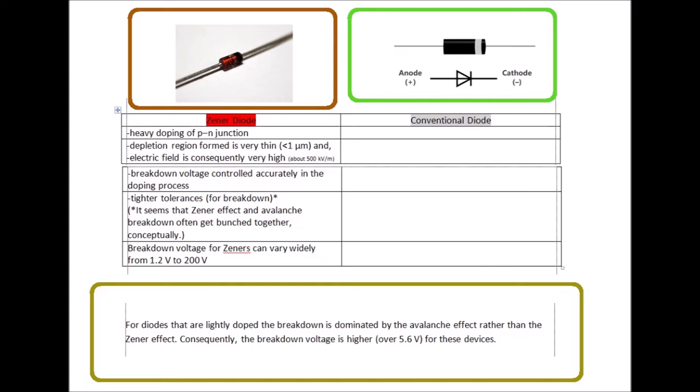But I still kept it in this chart form. Because maybe it can be seen that the information on the left, which highlights the specific features of a Zener diode, is more specific to Zener diodes and almost a contrast to conventional diodes. It's helpful to me. And I will read this chart.